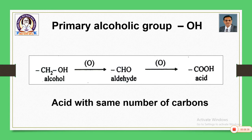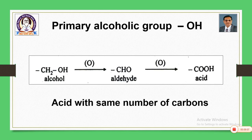Once the compound contains an alcoholic group, you have to investigate whether it is primary, secondary, or tertiary. If the compound contains a primary alcohol, then on oxidation it is initially converted into an aldehyde, and the aldehyde is further oxidized to an acid. During this entire process, the number of carbons remains the same. If the alkaloid undergoes oxidation giving an aldehyde and finally an acid with the same number of carbons, then it definitely has a primary alcohol.